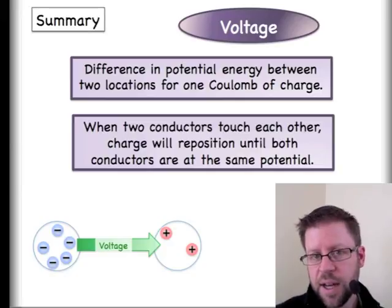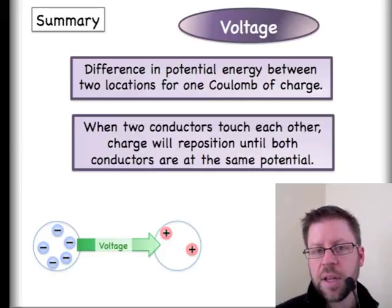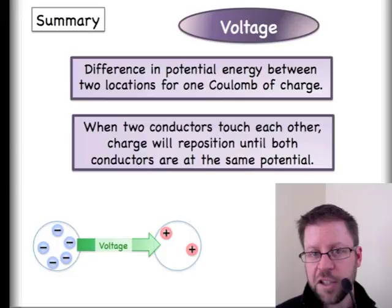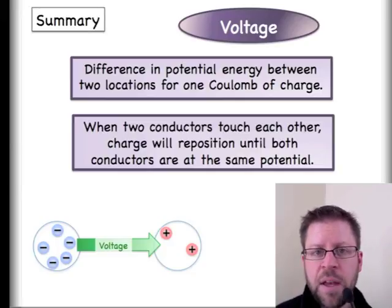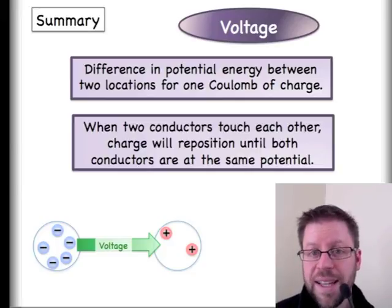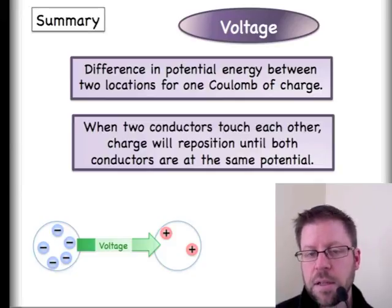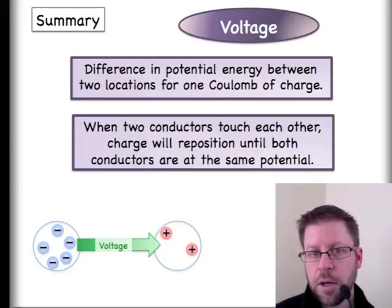This last concept that we're talking about in just the past minute or so says that anytime two conductors touch each other, they will immediately rearrange electrons until they're evenly distributed, so we could say that those two conductors are now at the same electric potential. The voltage or the electric potential difference between those two things has to immediately go to zero.